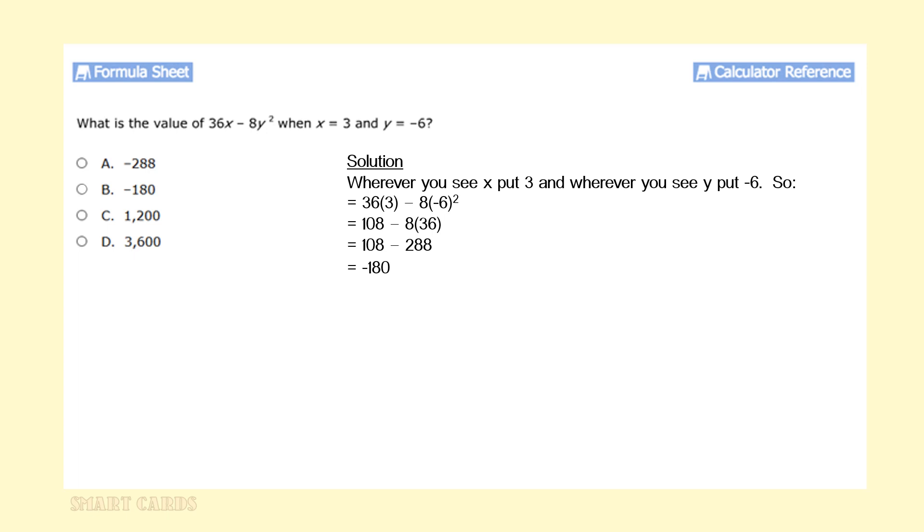Wherever we see x, we're going to put 3, and wherever we see y, we're going to put a negative 6, and then we're going to use our order of operation to solve this problem. So when we look at it, we're going to get 36 times 3 minus 8 times the negative 6 to the second power.